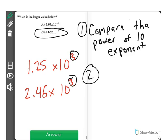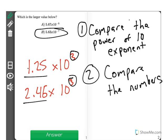Then what you need to do is go to step 2 and compare the numbers. The numbers in these would be 1.25 and 2.46. 2.46 is bigger, therefore that would be the larger number.